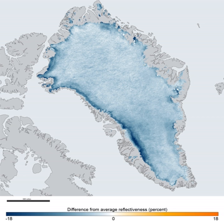The Greenland Ice Sheet is a vast body of ice covering 1,710,000 square kilometres, roughly 80% of the surface of Greenland. It is the second largest ice body in the world, after the Antarctic Ice Sheet. The ice sheet is almost 2,400 kilometres long in a north-south direction, and its greatest width is 1,100 kilometres at a latitude of 77 degrees north, near its northern margin.